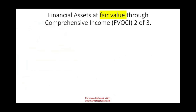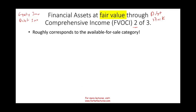The second category is financial assets at fair value through other comprehensive income (FVOCI). This category corresponds to what we know as 'available for sale.' Under FVOCI, you can have both debt investments (bonds) and equity investments (stocks). The question is: what is our intent when we make an investment? We have three options: hold to maturity, trade it, or something in between.